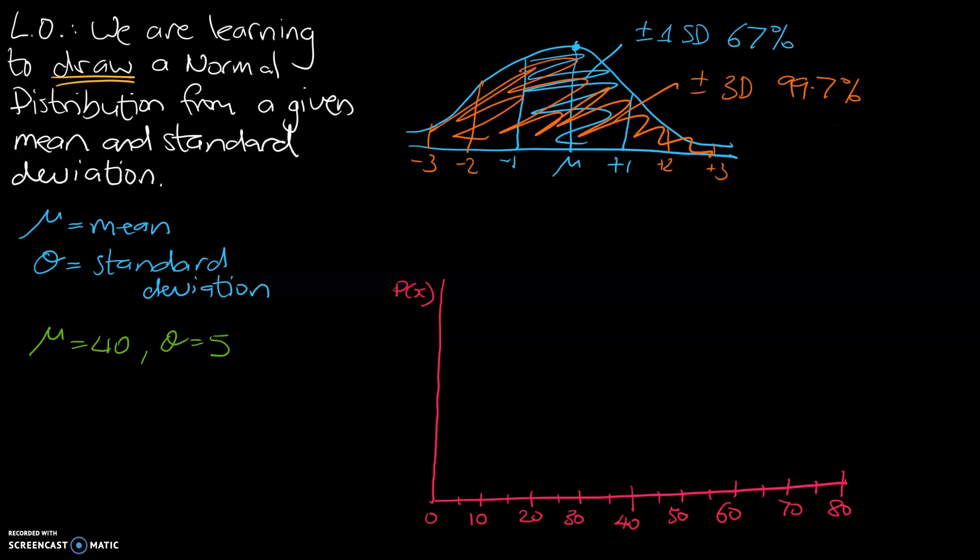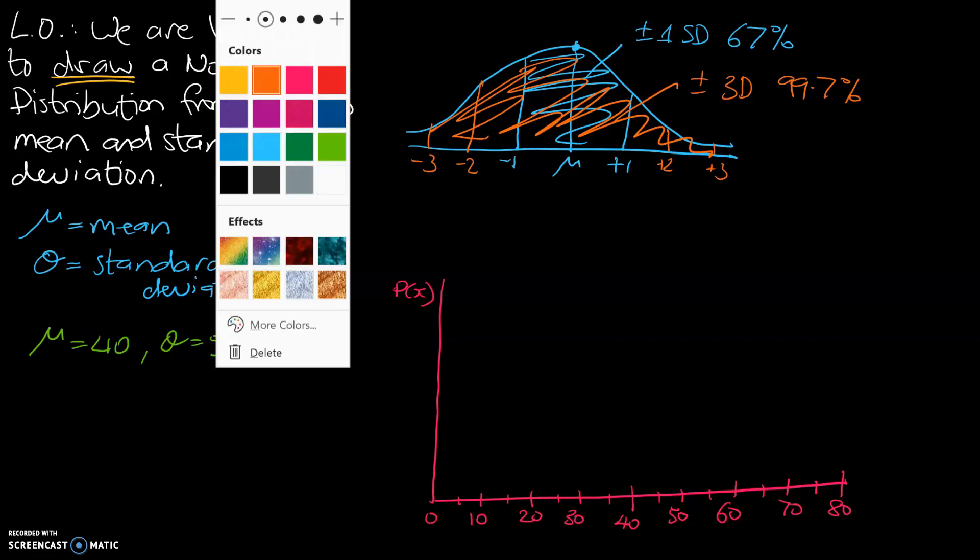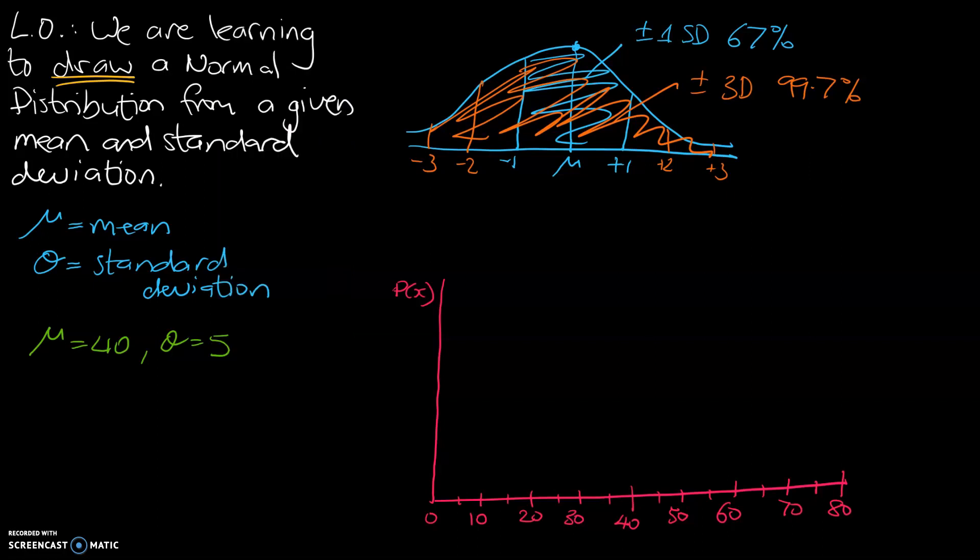So the way I like to do my normal distribution curves, I make a starting point of the mean, being 40. And then I will go plus or minus 3 lots of the standard deviation. And that helps me construct what the curve might look like. So let's get into an example and how that relates to our green example.